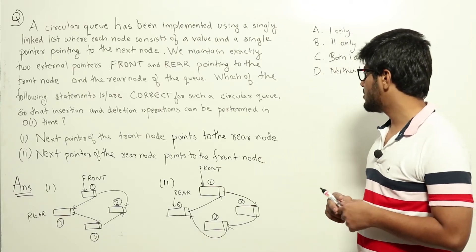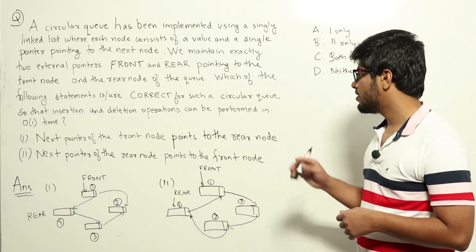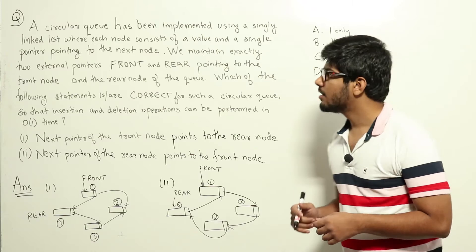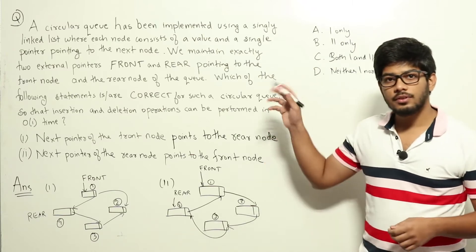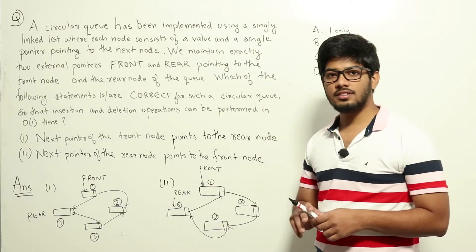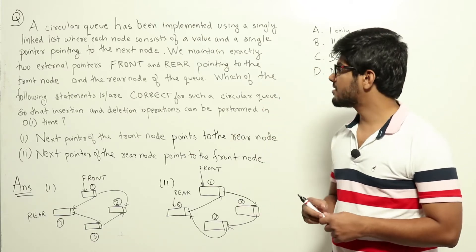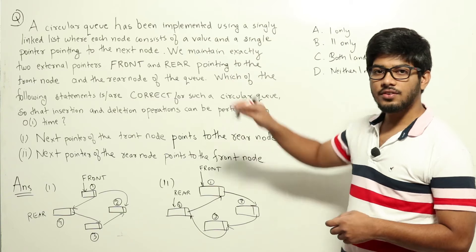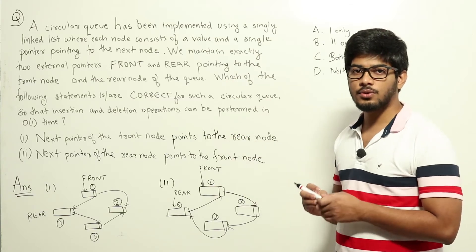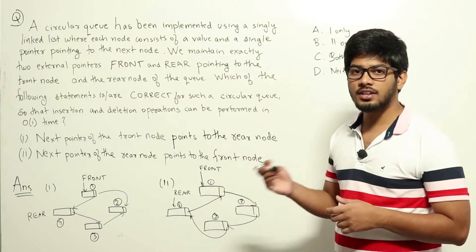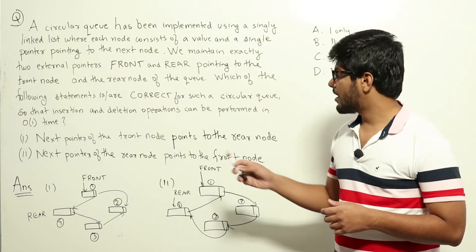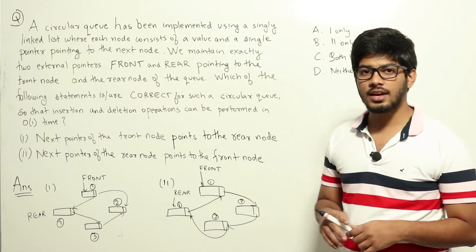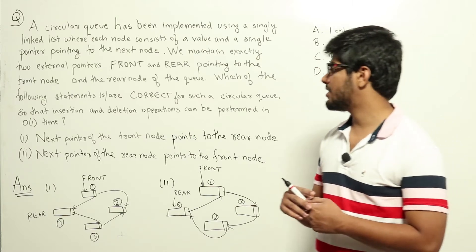Statement 1: Next pointer of the front node points to the rear node. Statement 2: Next pointer of the rear node points to the front node. This is a question from data structures regarding circular queues. We are given two implementations of a circular queue and we need to find out in which implementation insertion and deletion both can happen in O(1) time.